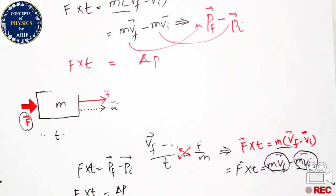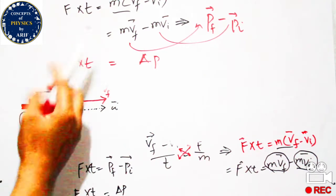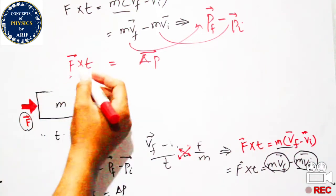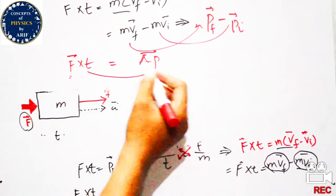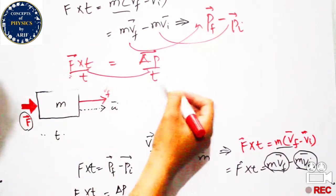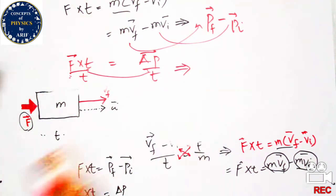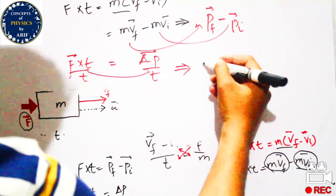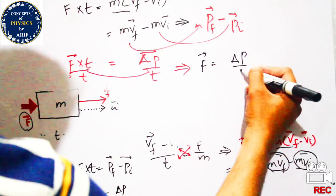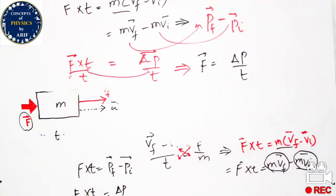The change in momentum of a body equals the product of force multiplied by time. If we want to calculate the time rate of change in momentum, we divide by time on both sides: F = Δp/t. This means that the time rate of change of linear momentum equals the applied force.